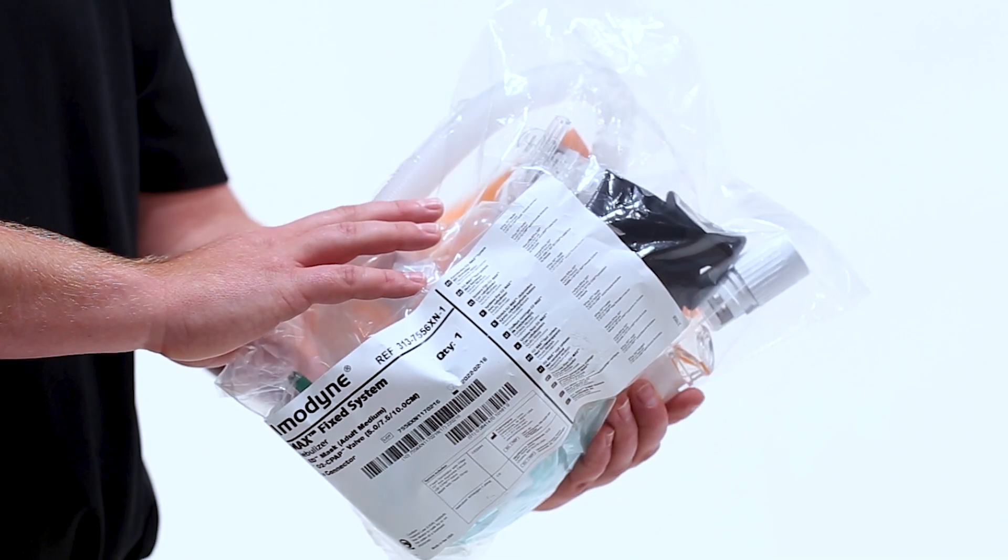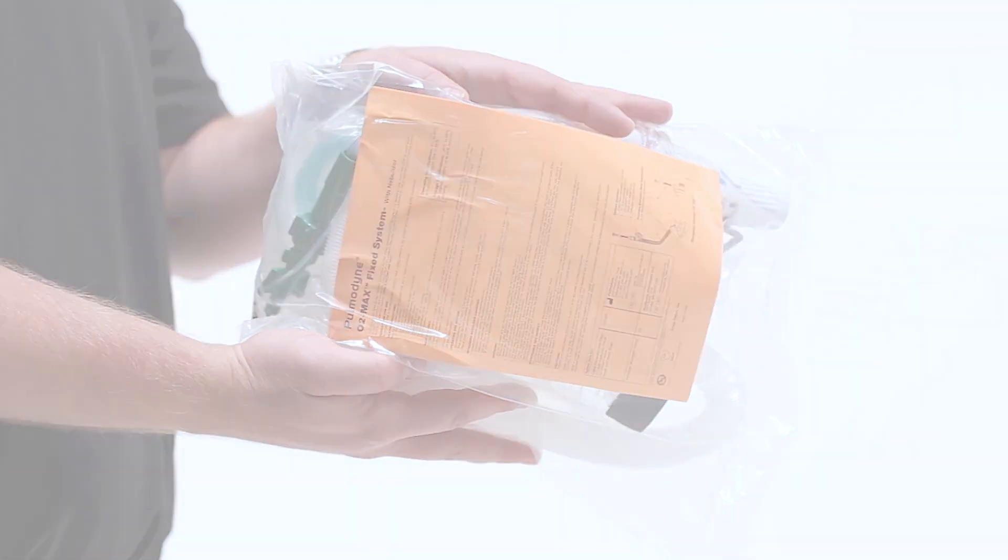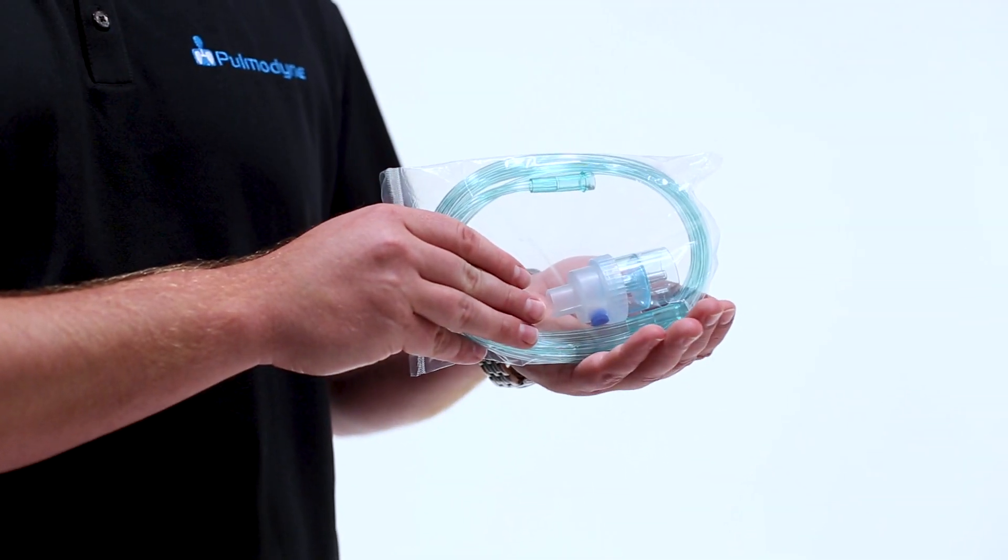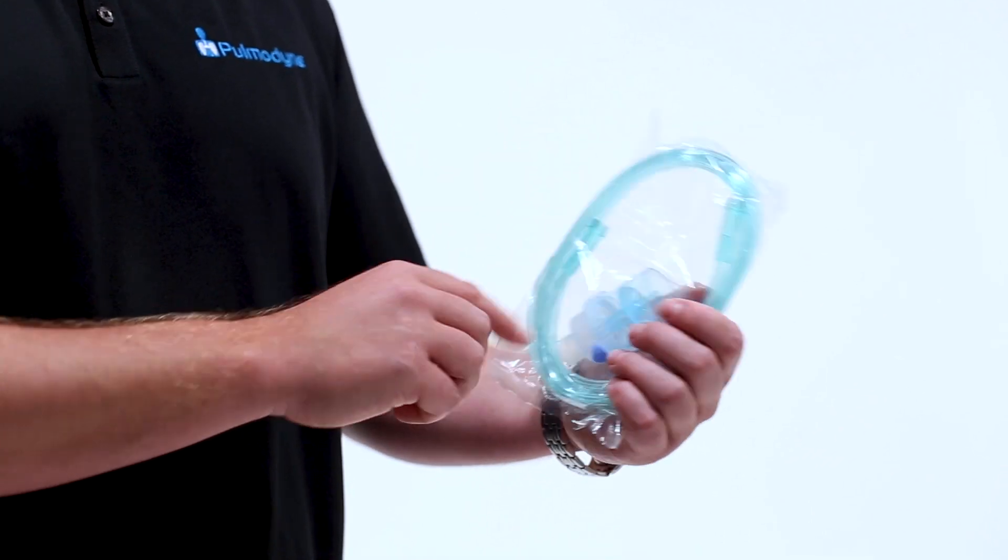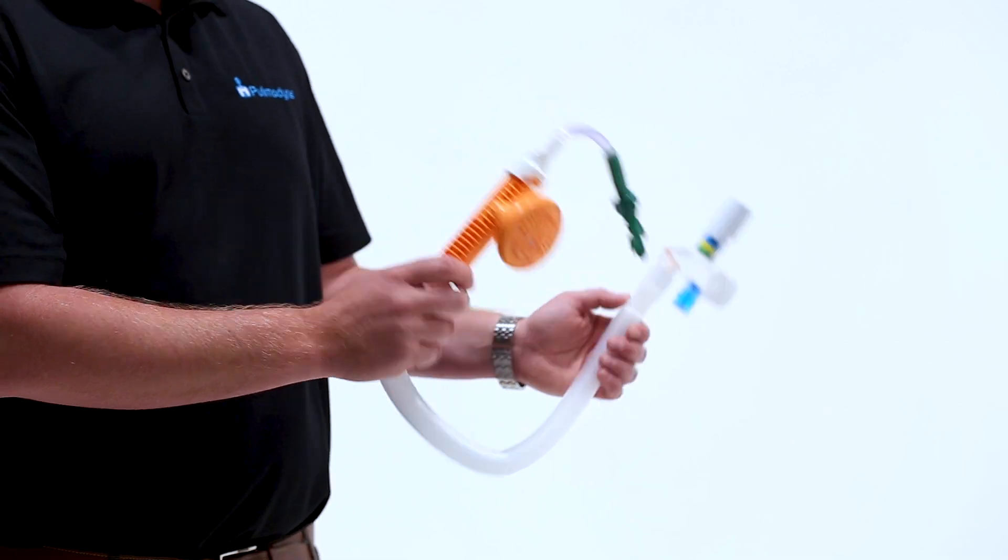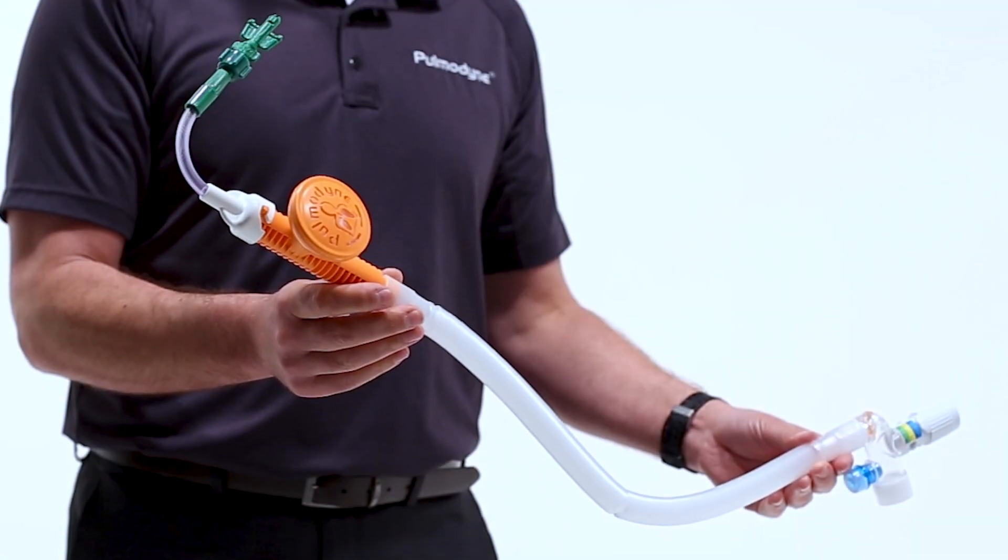The O2 Max with nebulizer comes in a small pack with a label that clearly illustrates the contents and size. Within the bag you will see the following items: directions for use, one BiTrac ED mask in a Ziploc bag, a nebulizer sealed in its own bag to use later if needed, the O2 Max generator itself, and vent tubing and elbow. This is part of the system that comes pre-connected to enable quick and easy CPAP application.